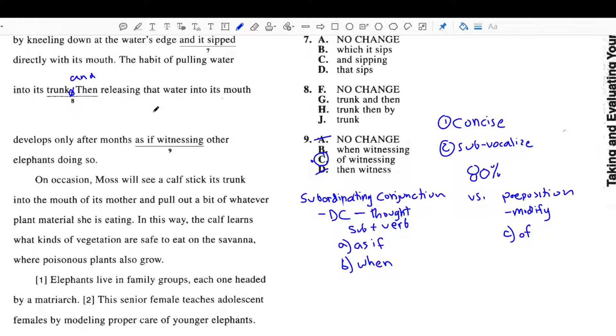So, what I would be doing here is modifying the amount of time that it takes. Months of witnessing. So, it takes months and this is what I'm doing during that period of time. We're witnessing other elephants doing so. So, I would be modifying the phrase beforehand. In other words, I would be modifying this whole sentence. I would not be starting a brand new thought.